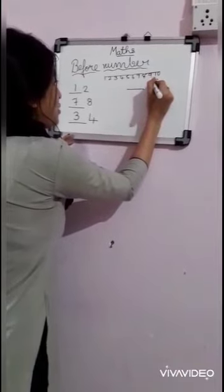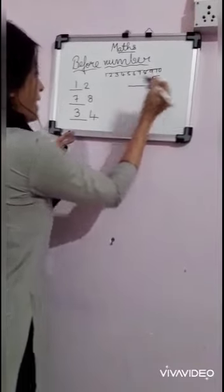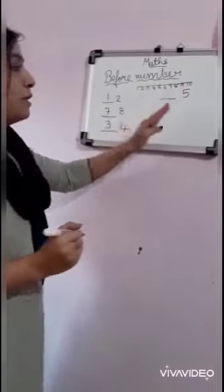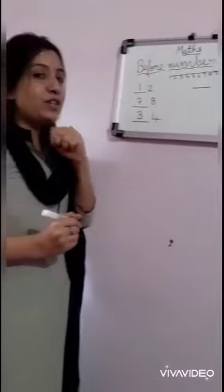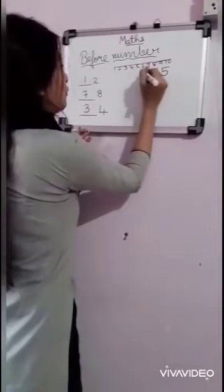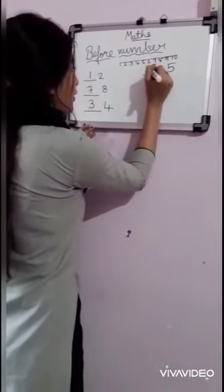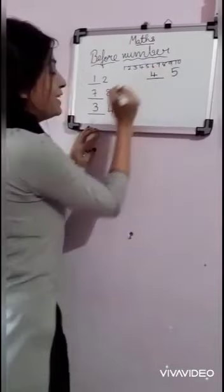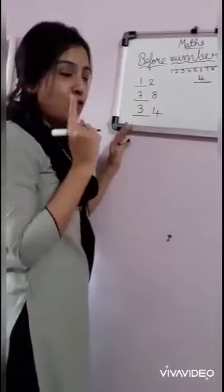Dash 5. So before 5, which number will come? 4. So I will write here 4.